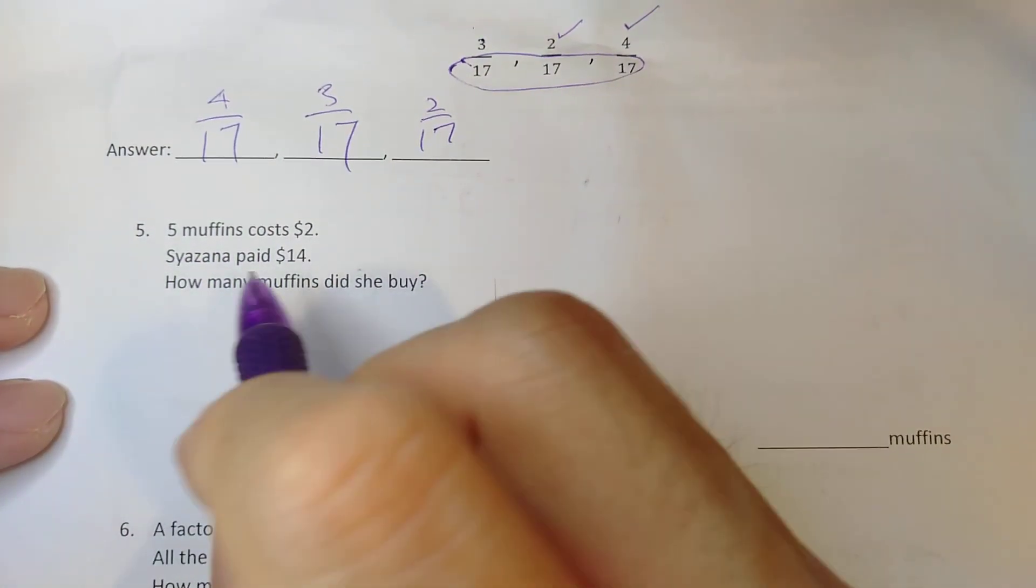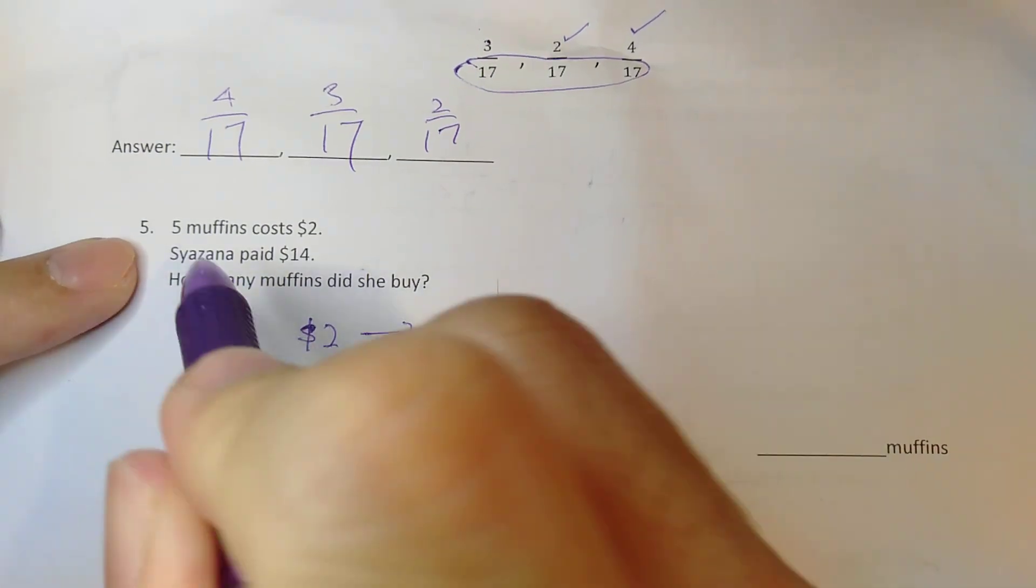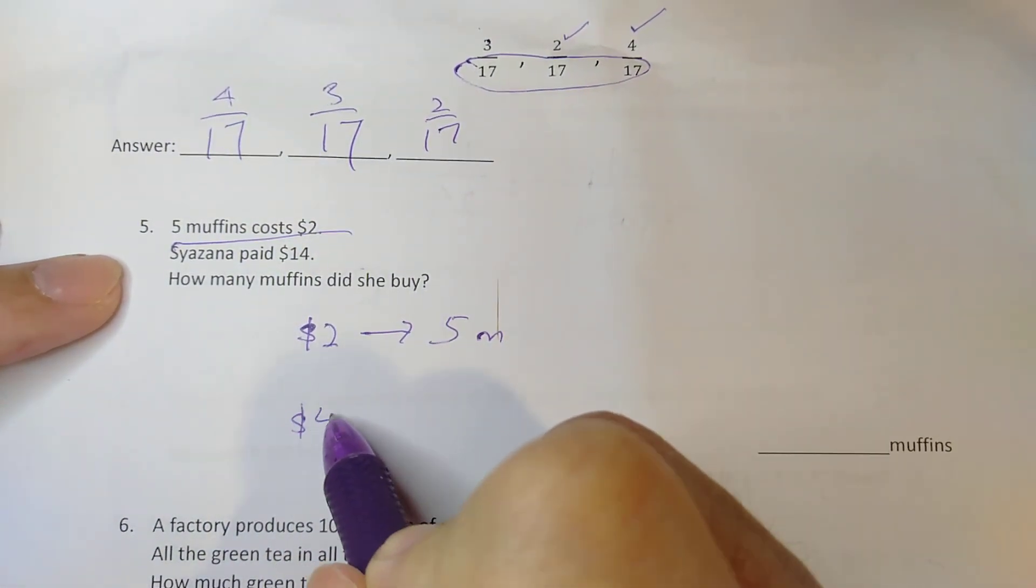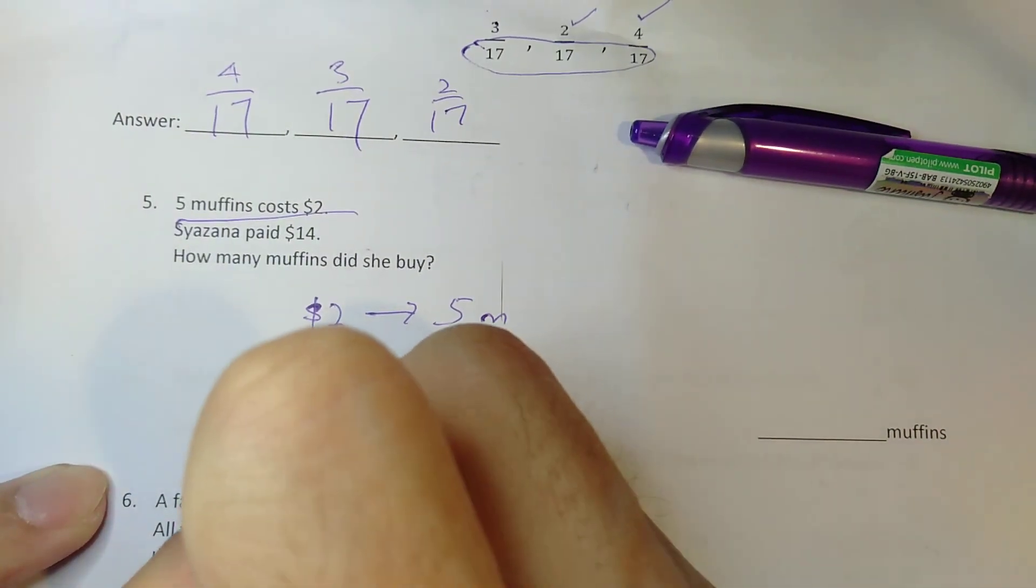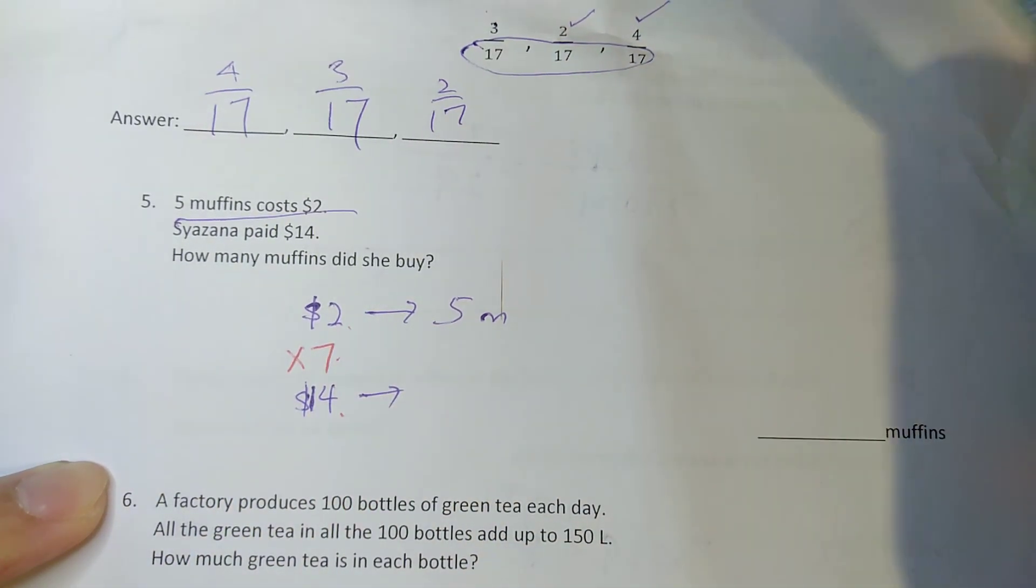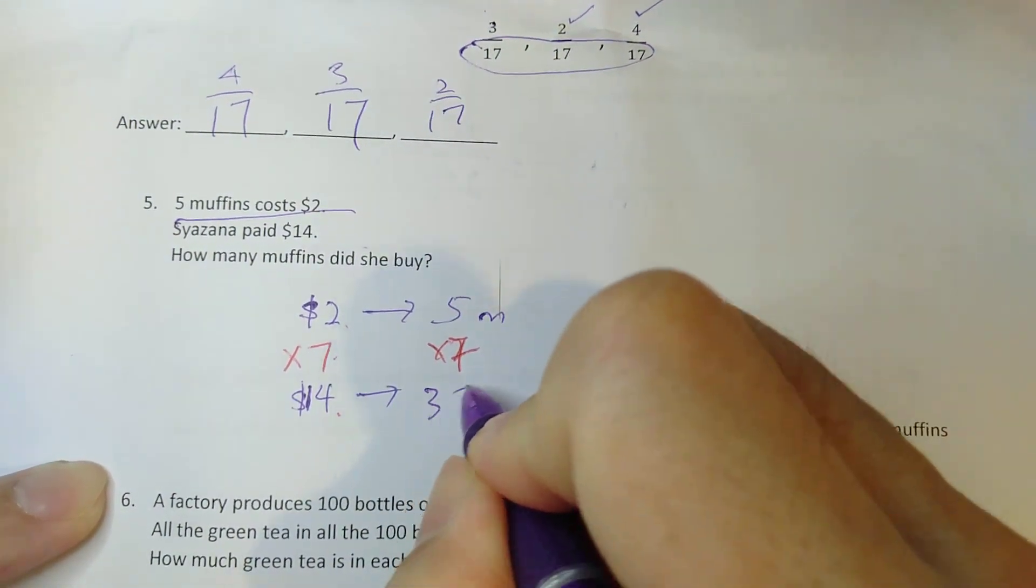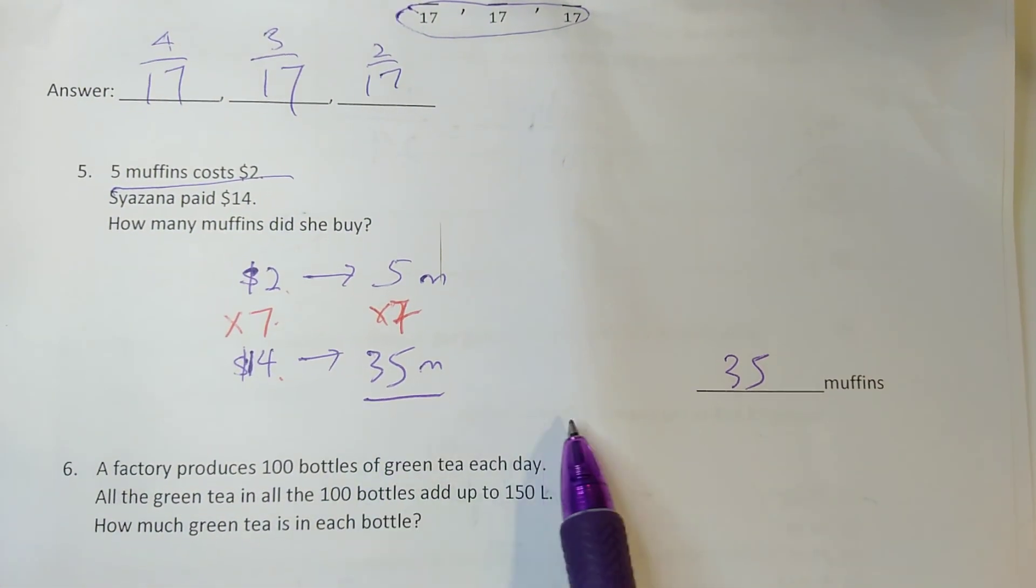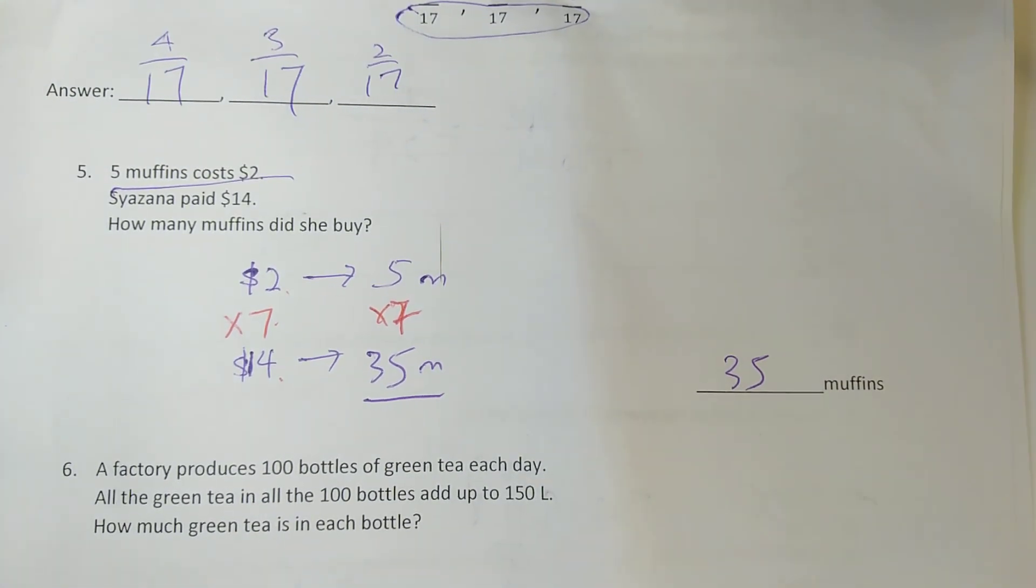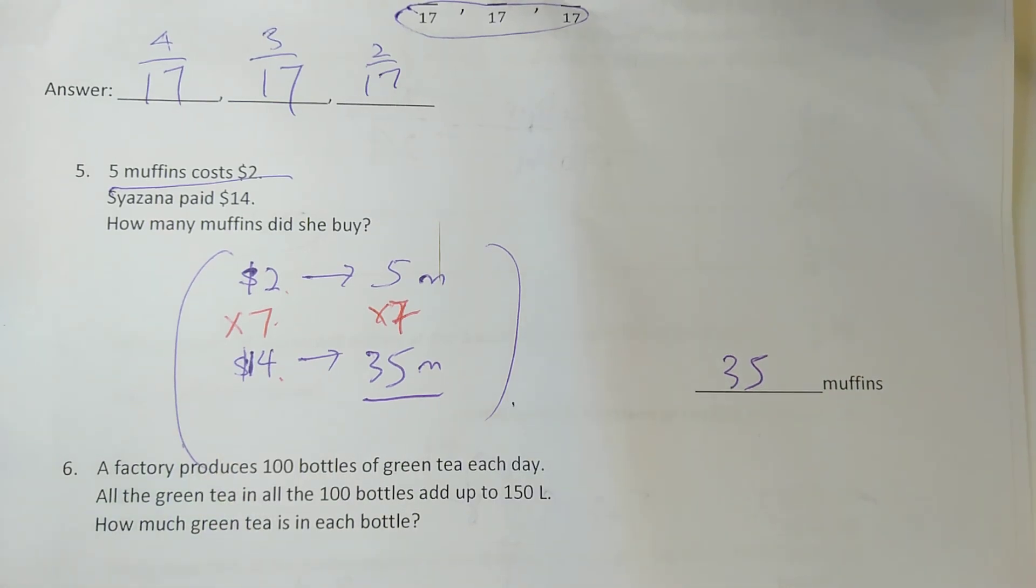5 muffins cost $2. Shazana paid $14. So if she paid $2, she will get 5 muffins. That's what the first sentence is about. Since she paid $14, how many times more is this? Well, $14 is actually 7 times more. See, 2 times 7 is 14. So here I will do the same. 5 times 7, I will get 35 muffins. So 35 muffins. Now some of you got the correct answer, but you did it in a less efficient way. So I will written out on your worksheet. I will need you to learn to do it this way. So for those who got it correct, and if you receive a bracket, please do the correction for this, this way.